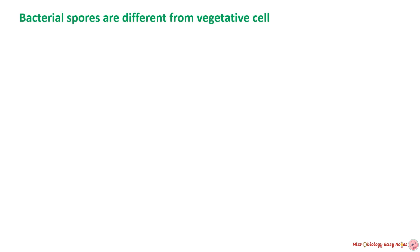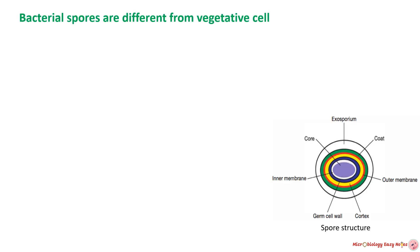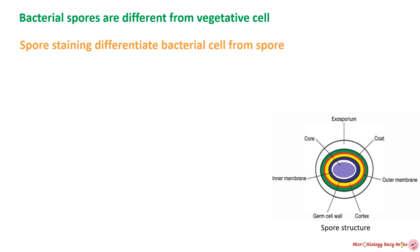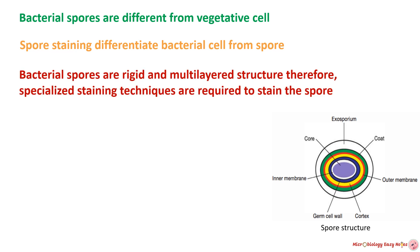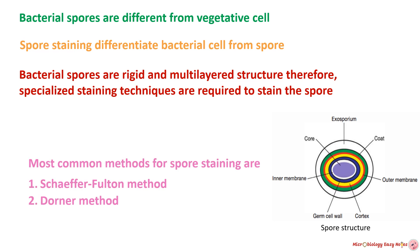Bacterial spore is different from bacterial cell. Spore staining is a microbiological technique used to visualize and differentiate bacterial spores from vegetative cells. Please watch the video on bacterial spore to know the structure, formation and characteristics of spore — the link is provided in the description box. To stain the spore, specialized staining techniques are employed which make spores visible under the microscope. The most common methods for spore staining are the Sheffer-Fulton method and the Dorner method.